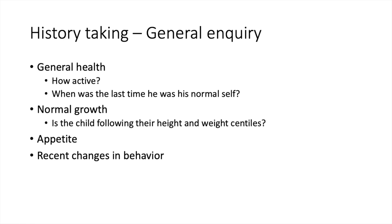General inquiry: ask about general health — how active is the child at home? This can tell you a lot. When was the last time they were their normal self? This can indicate the onset, which might be earlier than thought. Normal growth is the child following their height and weight centiles. If they are below their centiles, they might be malnourished. Ask about their appetite and drinking. Are they eating and drinking well? Any recent changes in behaviour?